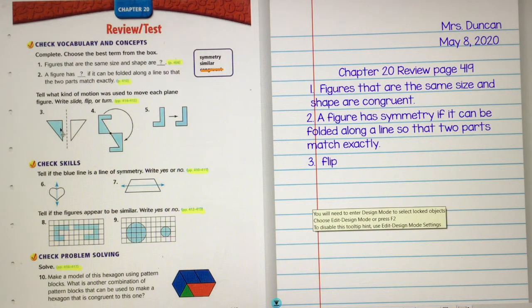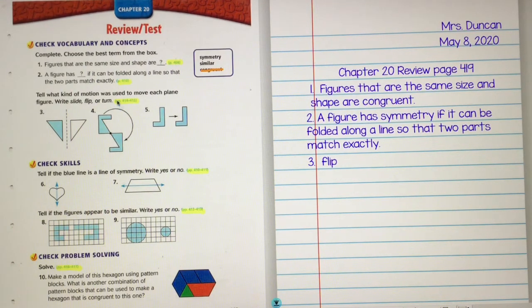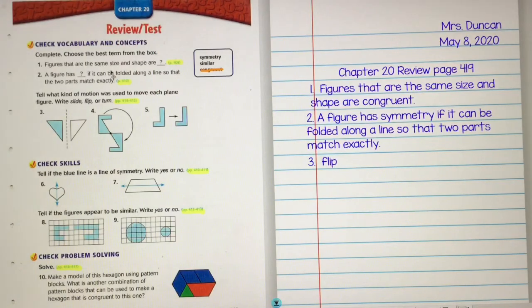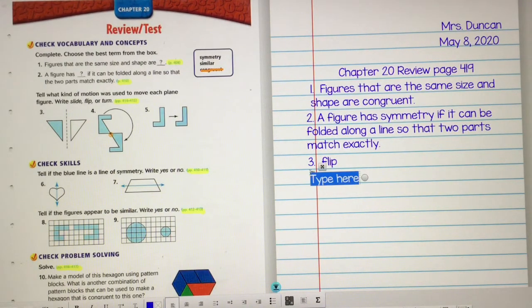Okay, now number four, it doesn't look like number three, so I definitely know it's not a flip. So did I slide it or did I turn it? Remember, I can go back to page 414. Did I slide it or did I turn it? I'm thinking it looks more like a turn, kind of like on a clock, right? From that one center point. Right right here, I turned it, holding that still. So for number four, I'm going to put turn.